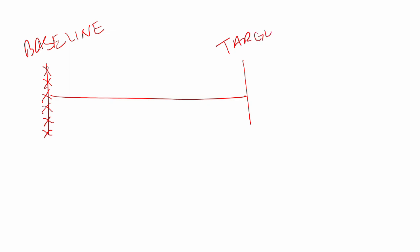Based on that discovery, we create a target architecture where we define that the challenges will be addressed — processes become leaner, data becomes less or more redundant depending on requirements, applications are standardized, and the technology stack is modernized. That's baseline first architecture. Then they also had a concept called target first architecture.